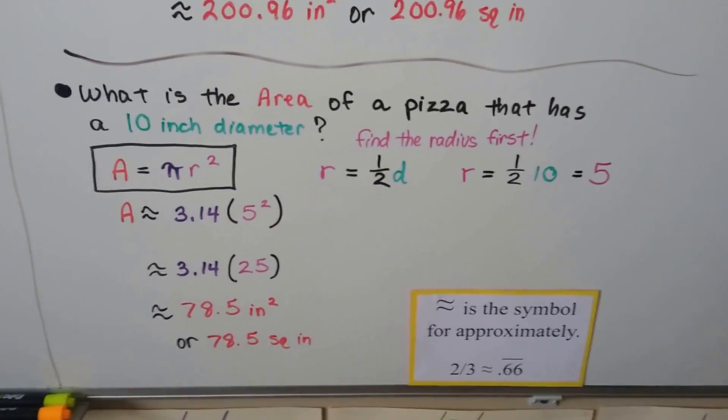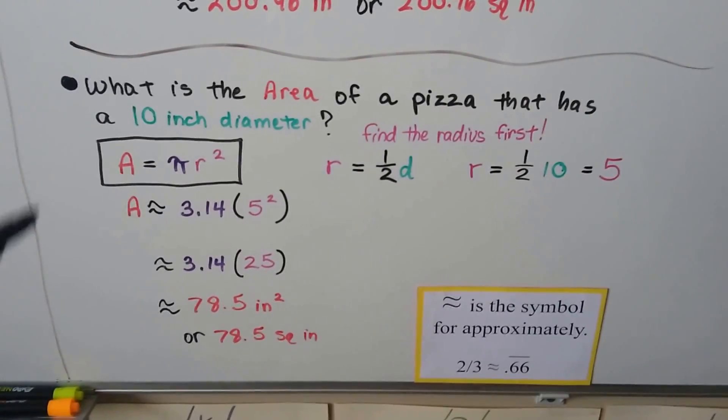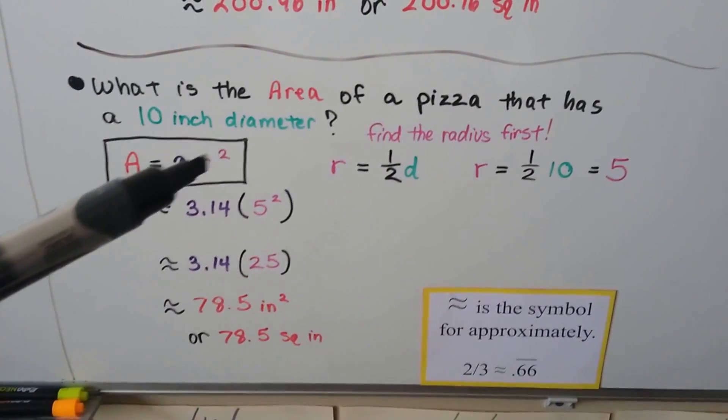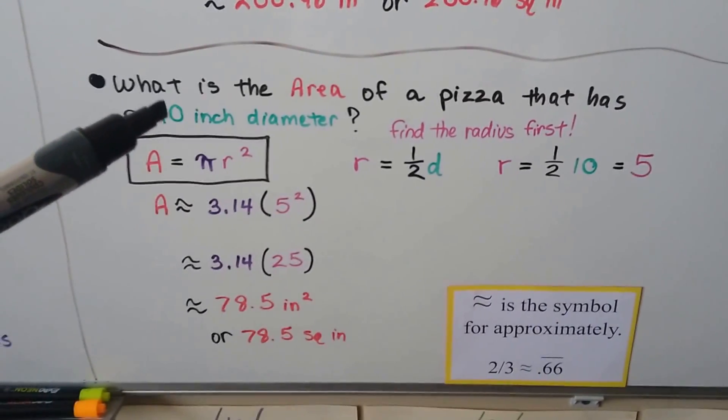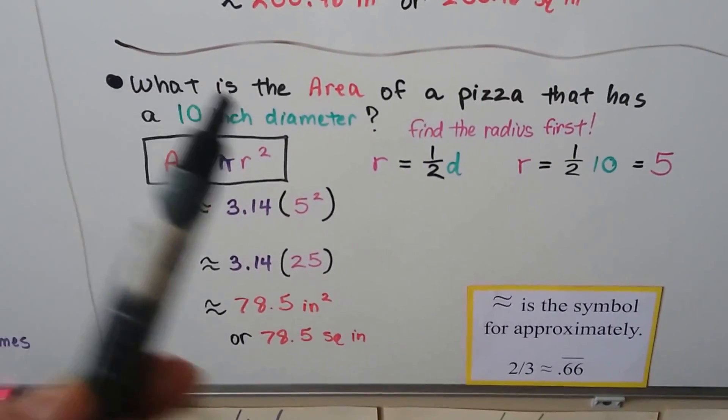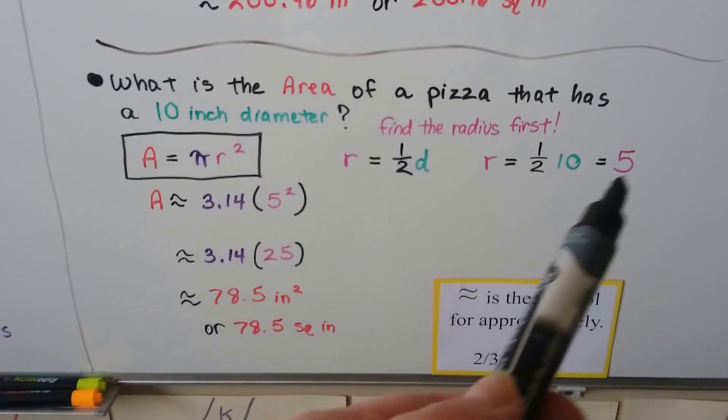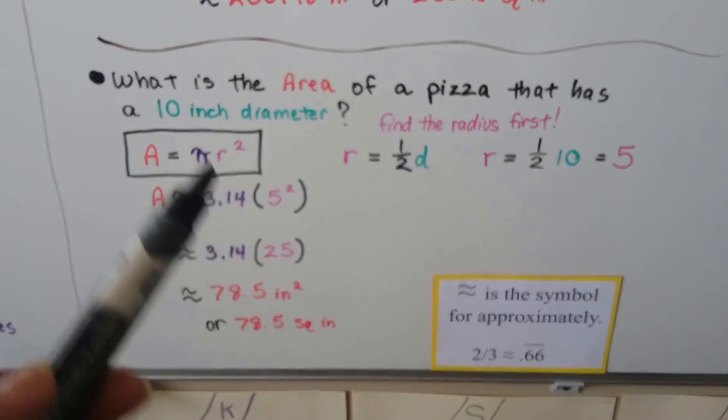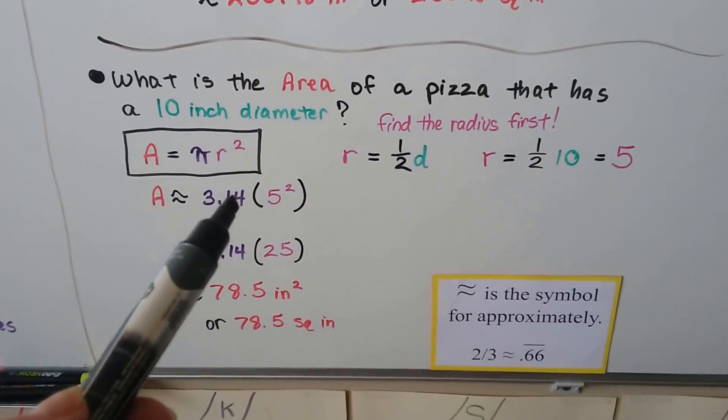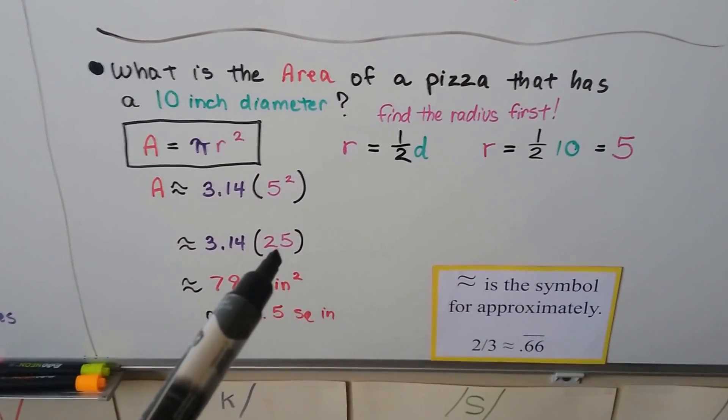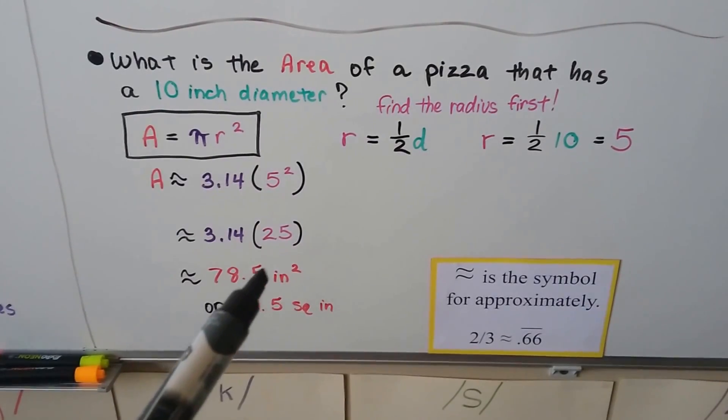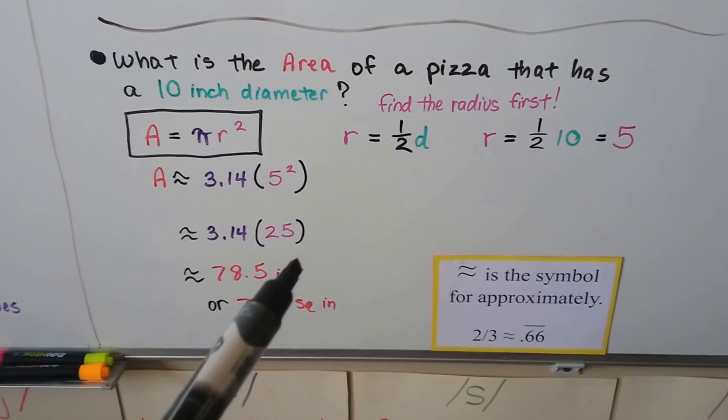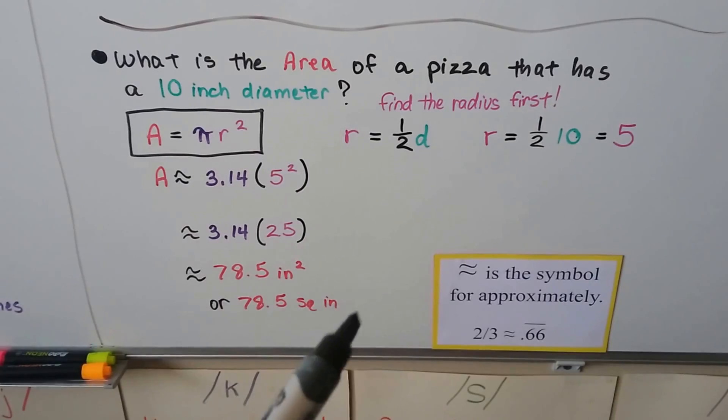What is the area of a pizza that has a 10 inch diameter? Well, the formula says radius squared. So if they give you a 10 inch diameter, just cut it in half, right? Because half of the diameter is the radius. So we know that the radius must be 5. So we plug it in to our formula, and we get 3.14 times 5 squared. Well, 5 squared is 25. We do 3.14 times 25, and we get 78.5 inches squared, with a little 2 exponent, or we can say square inches.